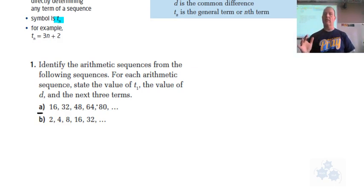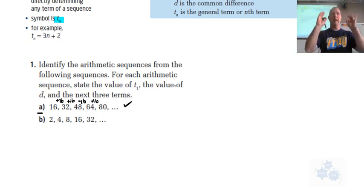Question number one says identify the arithmetic sequences from the following sequences. We're going to examine whether they are arithmetic or not. An arithmetic sequence is a list of numbers where the difference between each of the numbers would be the same. We need to check what the difference is between each of these numbers. 16 to 32, that looks like we're adding 16. 32 to 48, that's another 16. So here we have an arithmetic sequence. Yes, A is arithmetic.